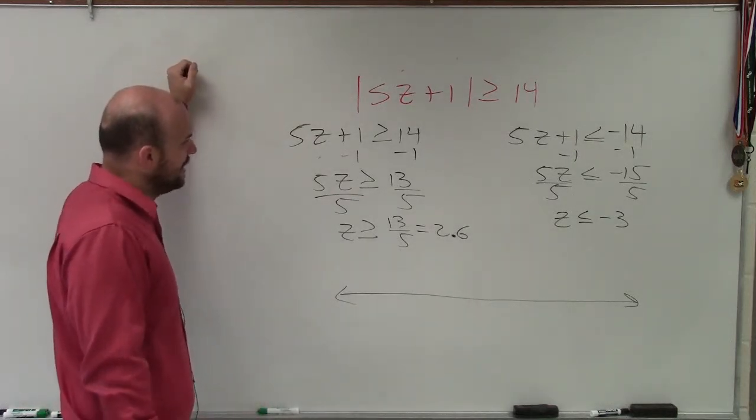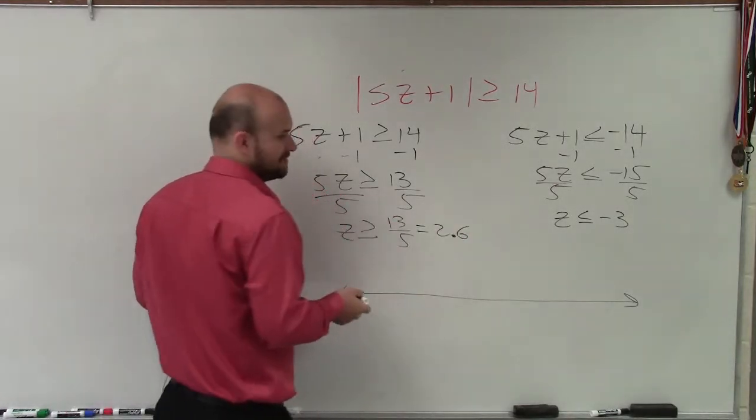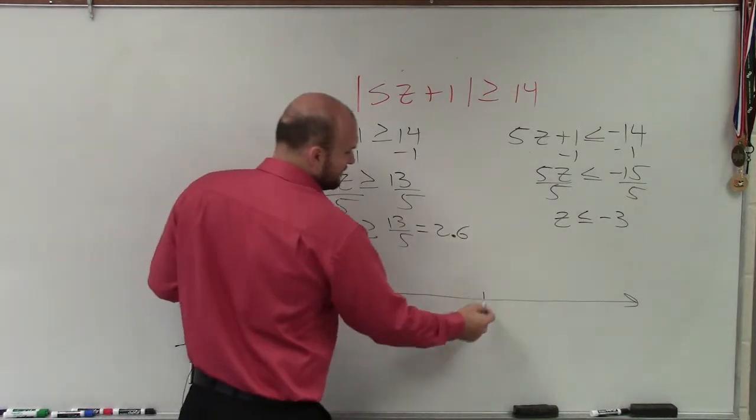Good. Got it. 0.6. So therefore, I have greater than or equal to 2.6 or less than or equal to negative 3. So on my graph, I'm going to want to make sure I contain 2.6 and negative 3.